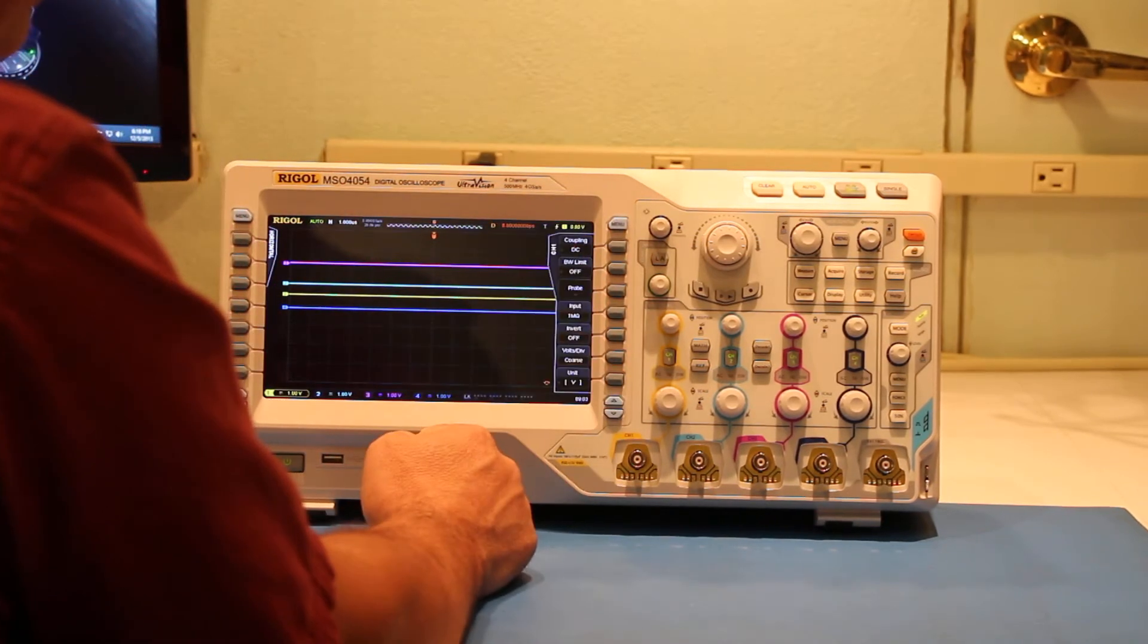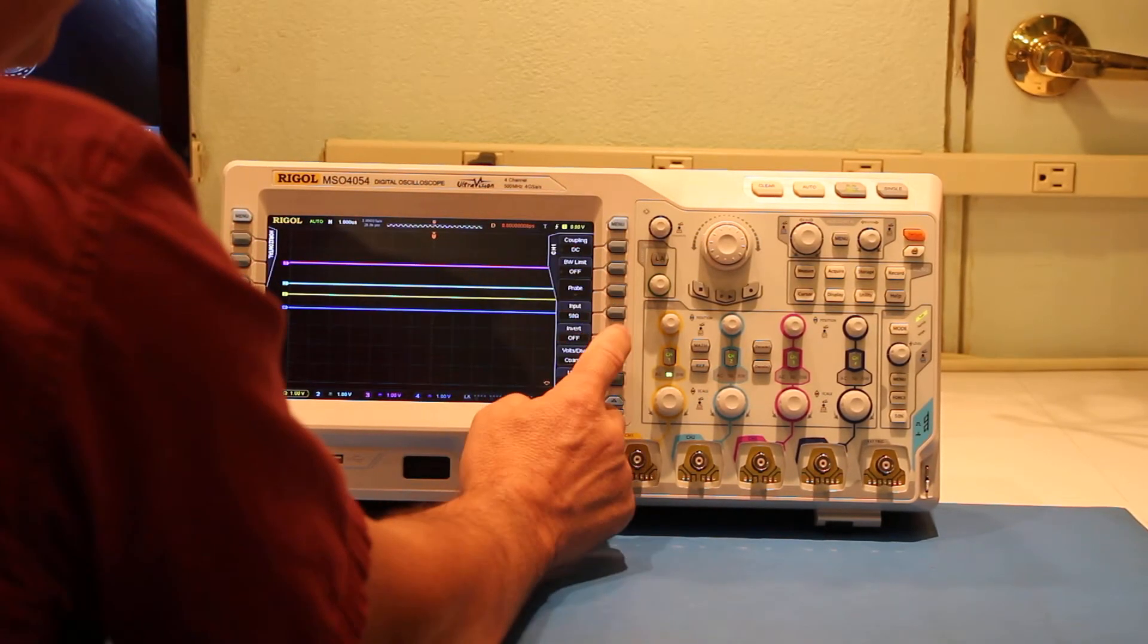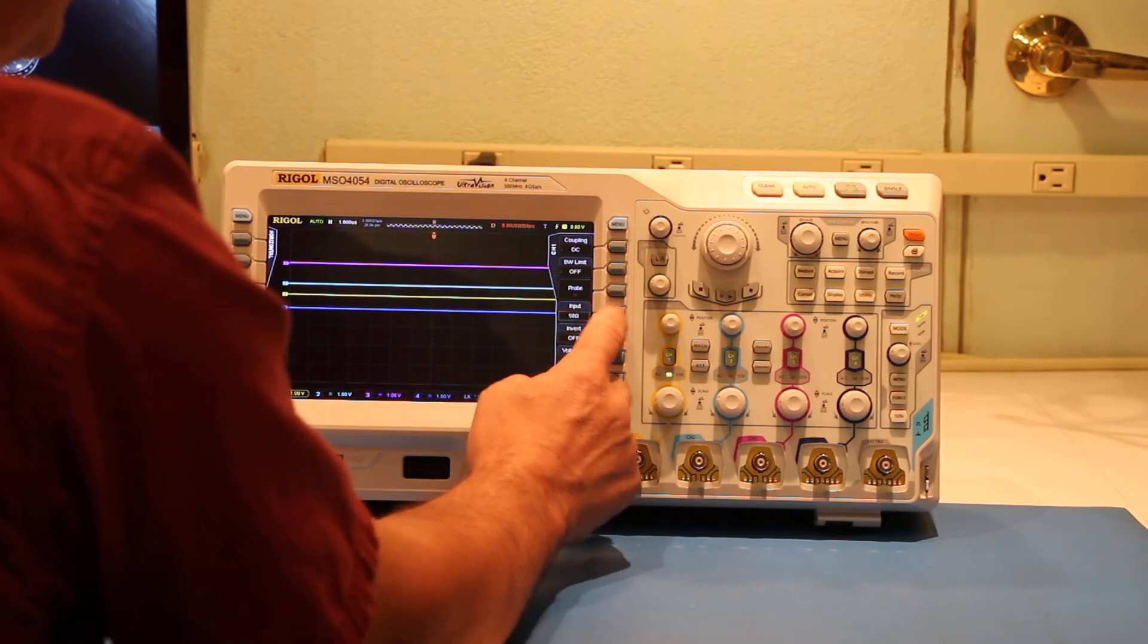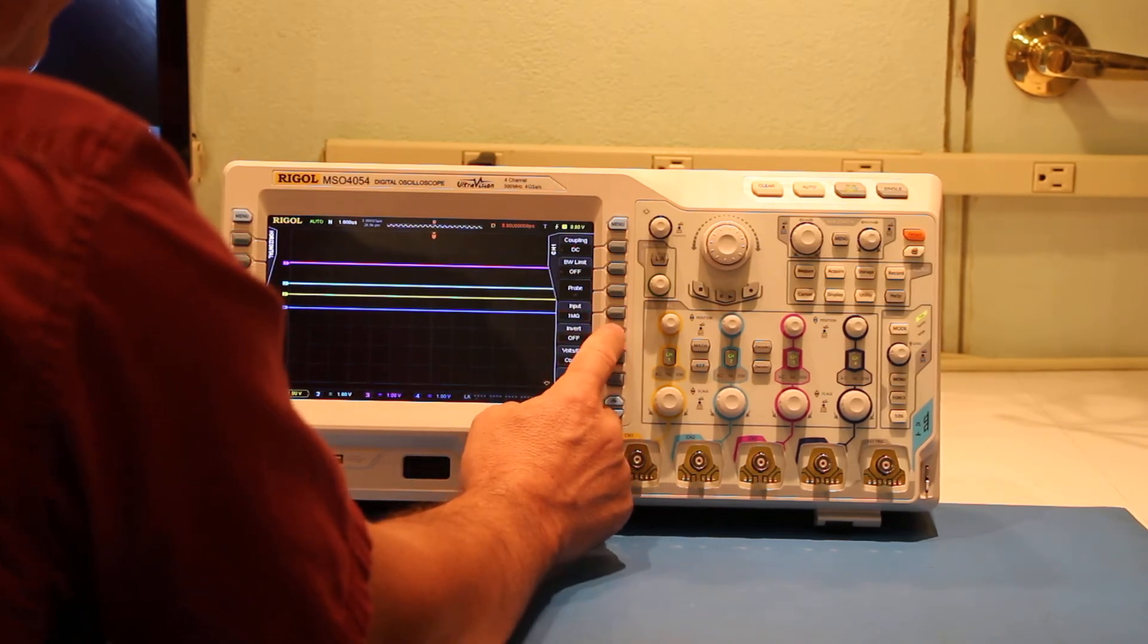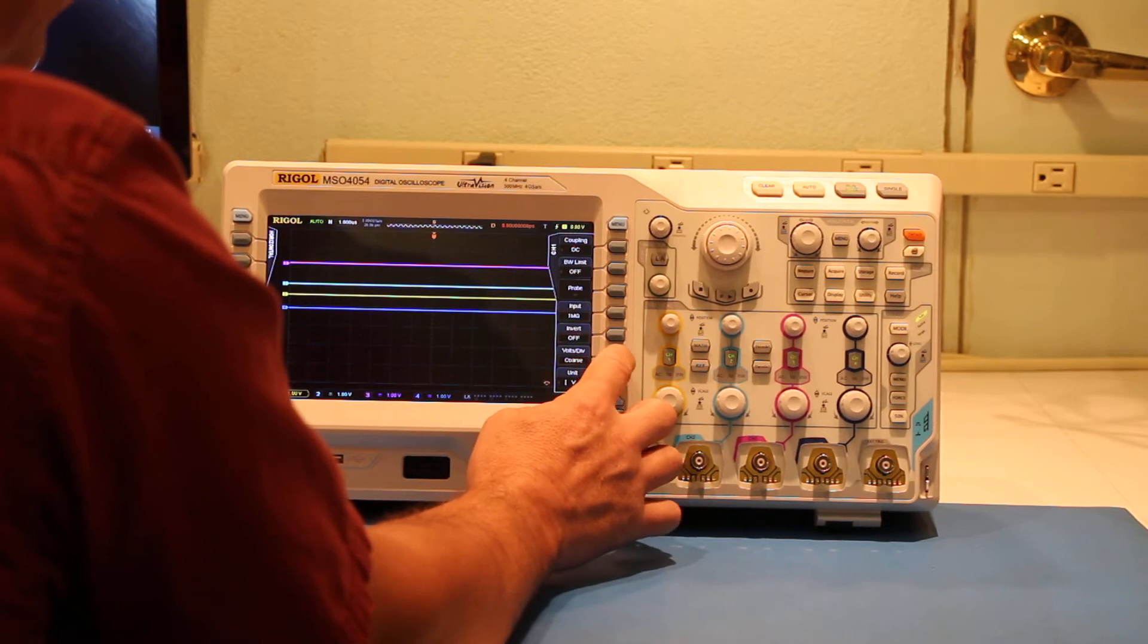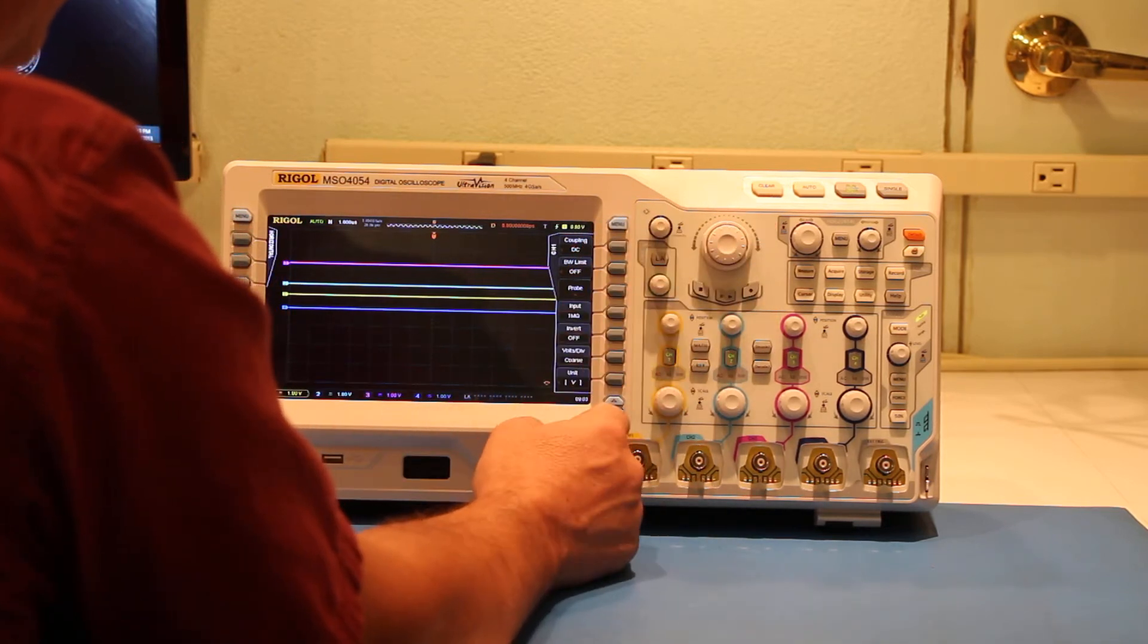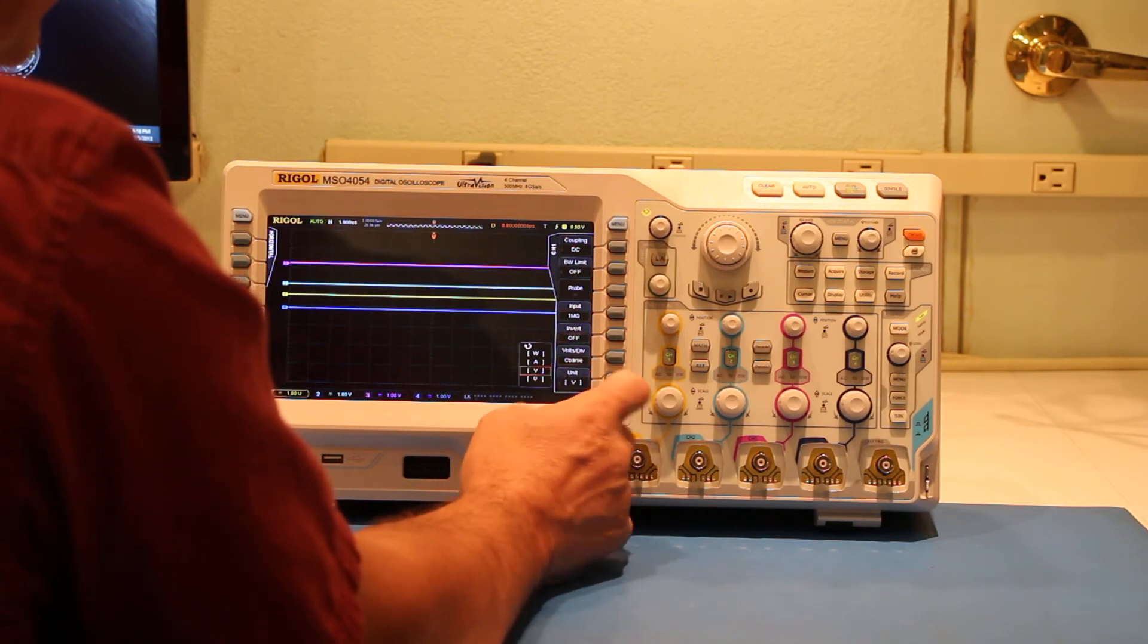We can change the input impedance from high input impedance down to 50 ohms. We can turn invert on and off. We can change the button here that allows you to adjust coarse or fine. Units are currently in volts, but we can change it to other units here.